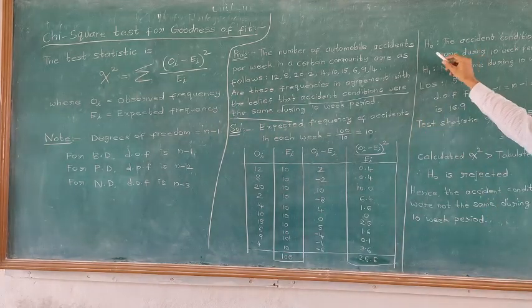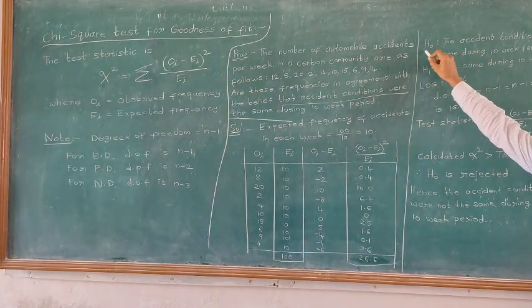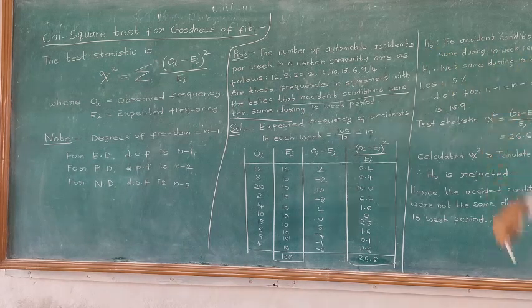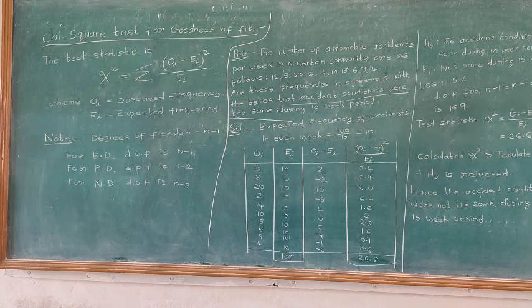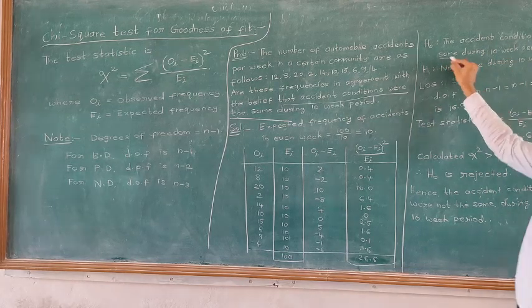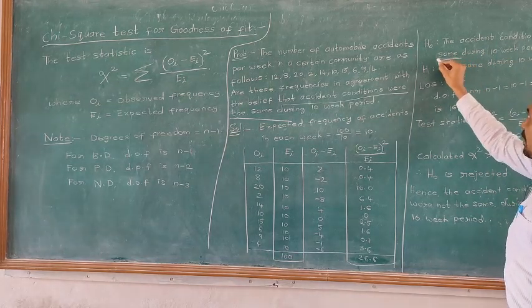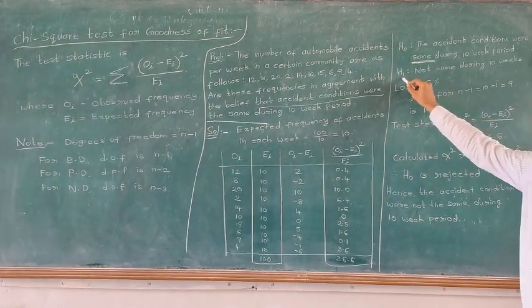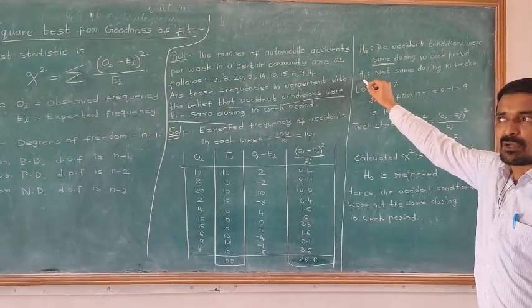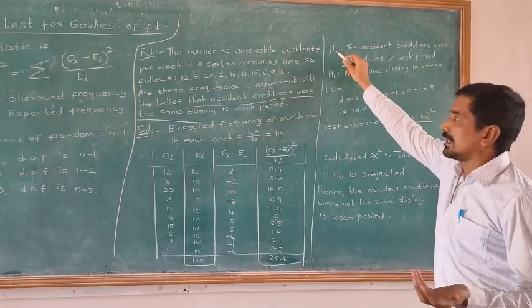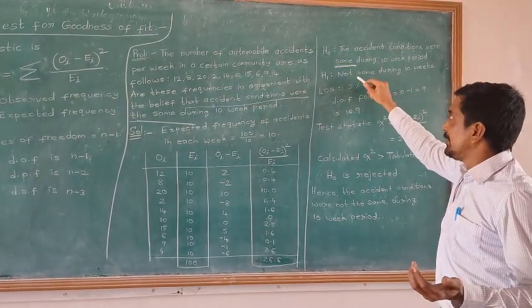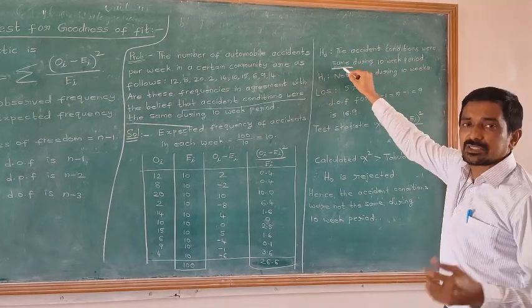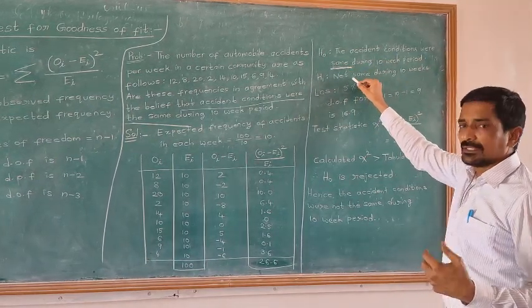The null hypothesis H0 is that the accident conditions were the same within the 10-week period — that is, all conditions are equal. The alternative hypothesis H1 is the opposite of the null hypothesis, meaning the conditions are not the same during that period.